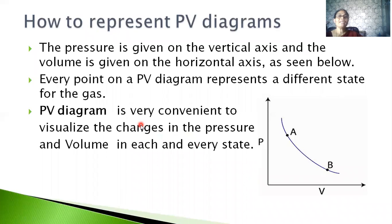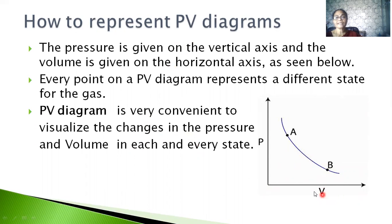Now we will see how to represent a PV diagram. Generally, a PV diagram is plotted by taking volume on the horizontal axis, that is the x-axis, and pressure on the vertical axis, that is the y-axis.